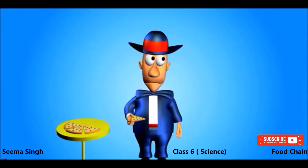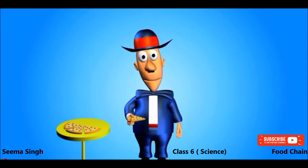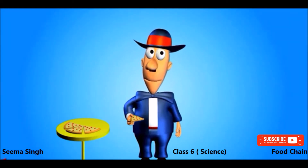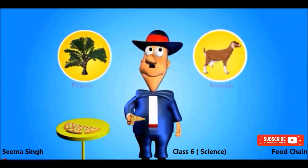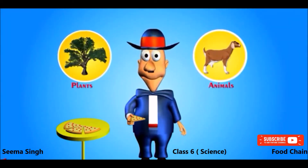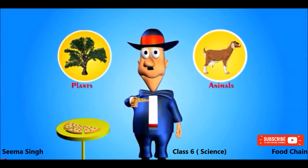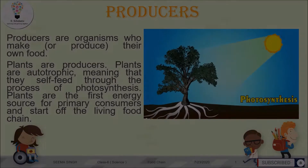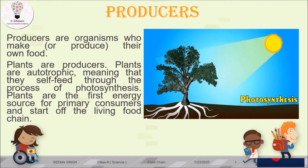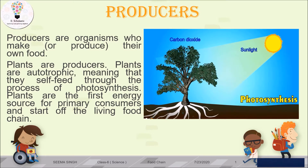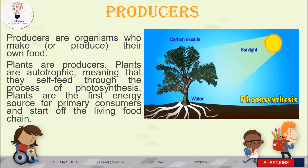In the video, we learned that humans get all our food from animals and plants. So we have seen that the sources from where we get our food are plants and animals. Now, how are these plants and animals connected to the food chain? Let's understand this.